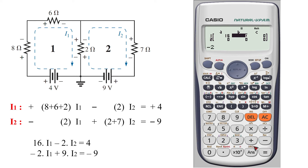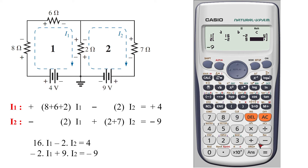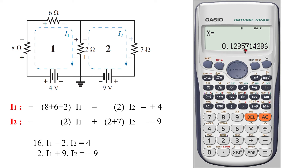The mesh equation for loop two is: plus 9 i2 minus 9 equal to minus 9. Solving this using a calculator, we obtain i1 value equal to 0.1286.